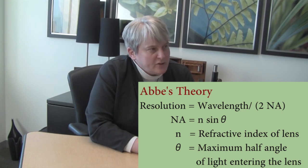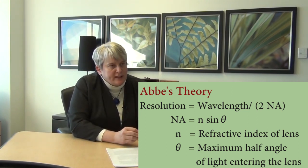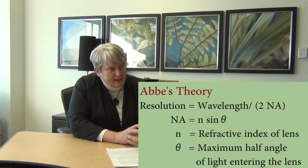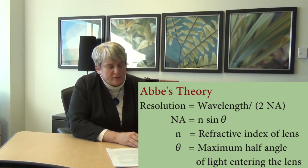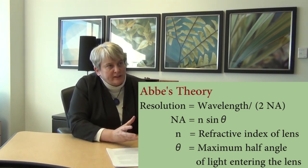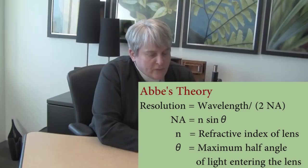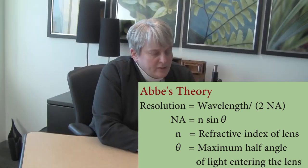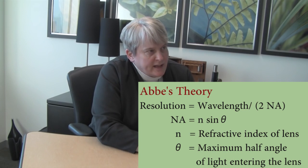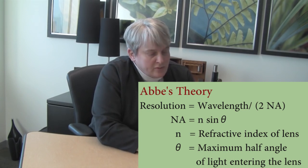The numerical aperture is the product of the refractive index of the medium that the light passes through, and the sine of the angular aperture of the lens used for imaging. There is a limit on how wide you can make that angular aperture for the lens, and that determines your resolution.